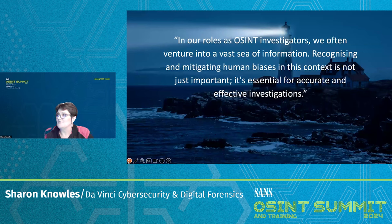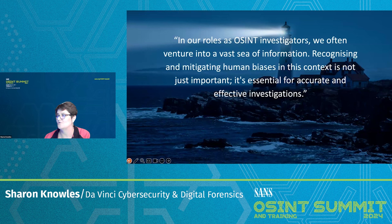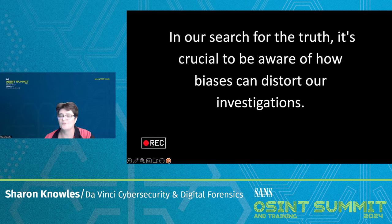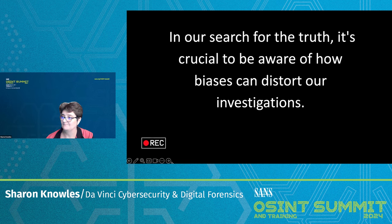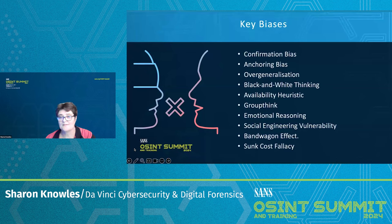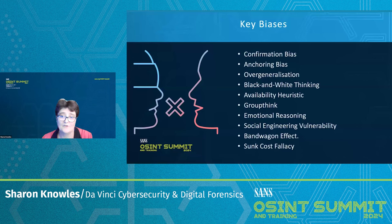In our roles as OSINT investigators, we often venture into a vast sea of information. Recognizing and mitigating human biases in this context is not just important — it's essential for accurate and effective investigations. In our search for the truth, it's crucial to be aware of how our biases can distort our investigations. The key biases I've chosen to discuss today are ten: confirmation bias, anchoring bias, overgeneralization, black and white thinking, availability heuristic, groupthink, emotional reasoning, social engineering vulnerabilities, the bandwagon effect, and the sunk cost fallacy.